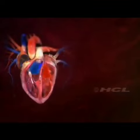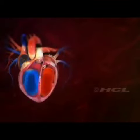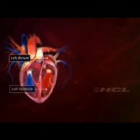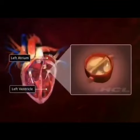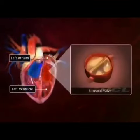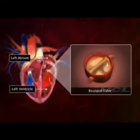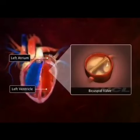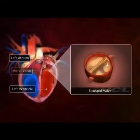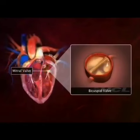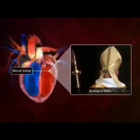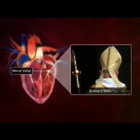On the other side, the left atrium and ventricle are connected through a bicuspid valve. The bicuspid valve is also called the mitral valve because of its resemblance to a bishop's two-sided mitre or hat.